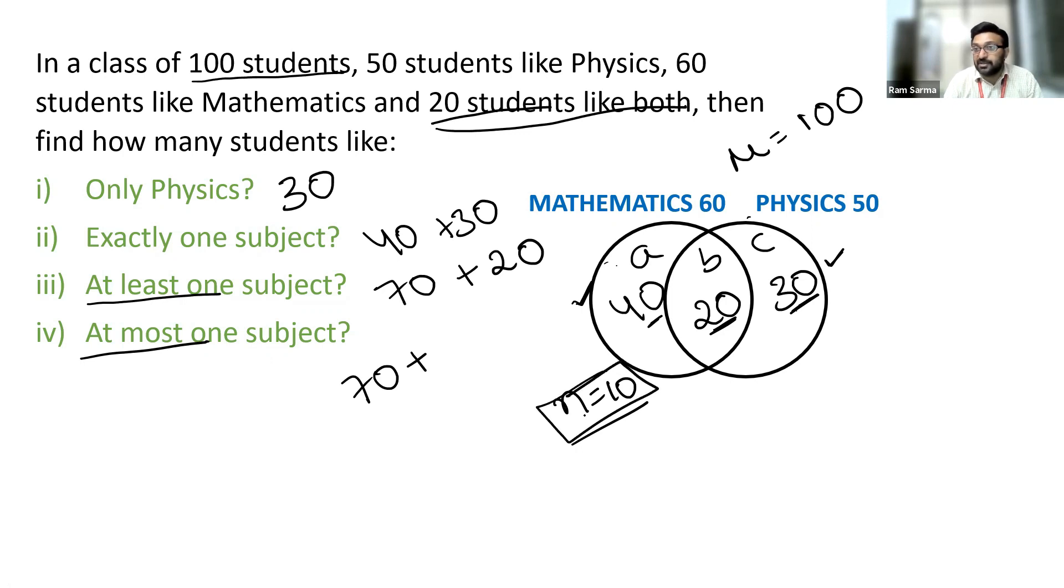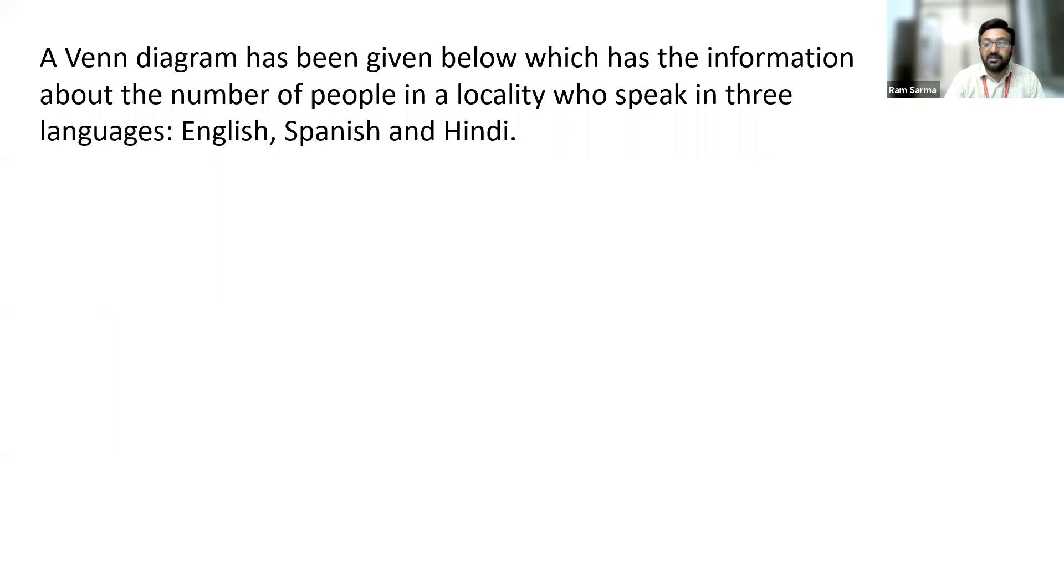So these are the students who are in mu, but they did not include in any of the given subjects. They are not participating in any of the given sets. So 70 plus 10. So these 10 members like zero subjects, which is less than one. So 70 plus 10, which gives you 80.